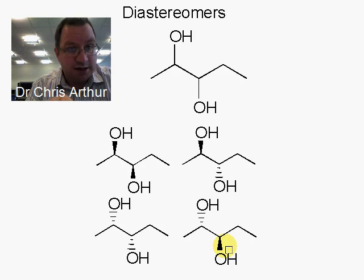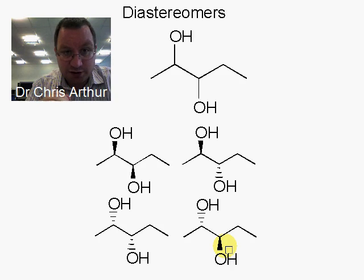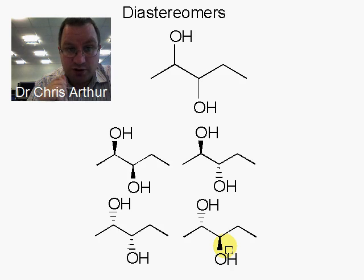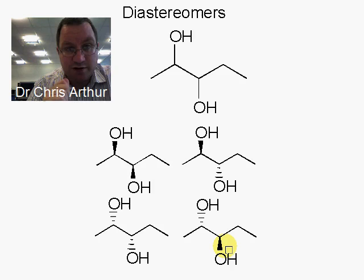Diastereomers are stereoisomers which are not enantiomers, so they do not have a non-superimposable mirror image of one another.